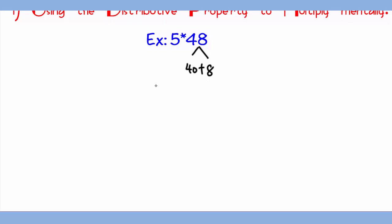Then you will have 5 times (40 plus 8) in parentheses. Using the distributive property, you will first do 5 times 40, which gives you 200, and then 5 times 8, which gives you 40. Then you add them together, which gives you 240.